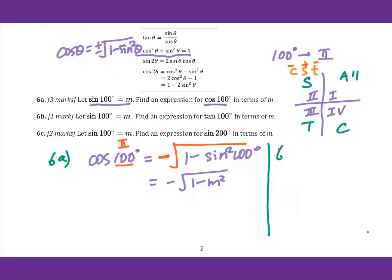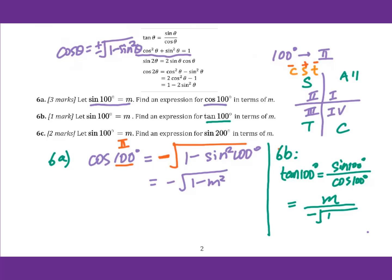For 6b, find an expression for tangent 100°. We know tangent 100° equals sine 100° over cosine 100°. So we plug in: sine 100° is m, cosine 100° is negative square root of 1 minus m squared. You can leave it as is or move the negative sign to the numerator — both are acceptable for 6b.